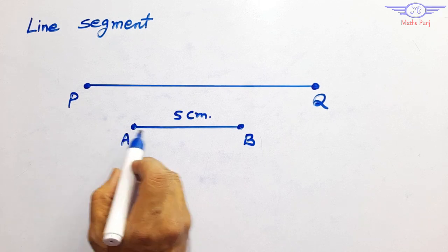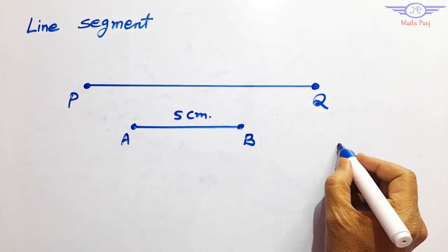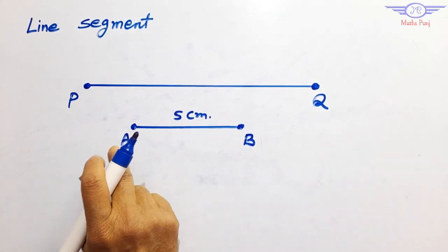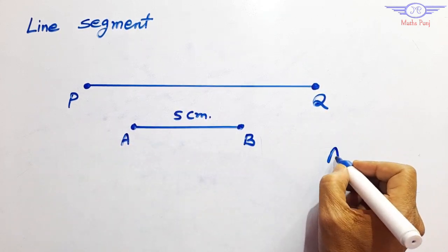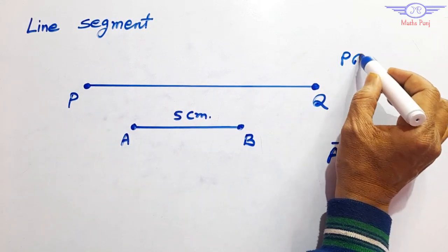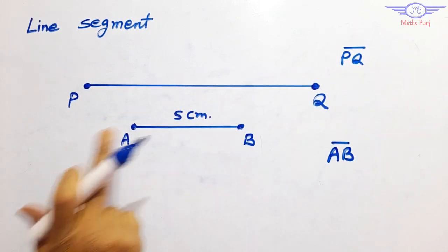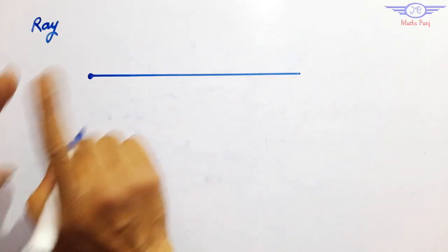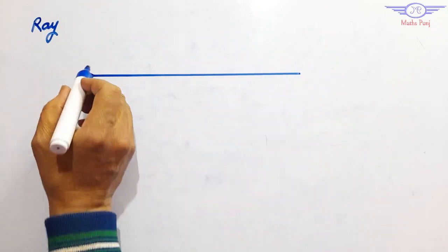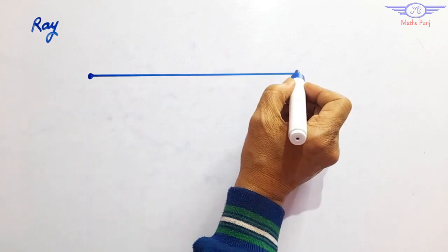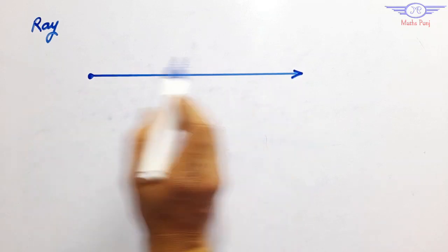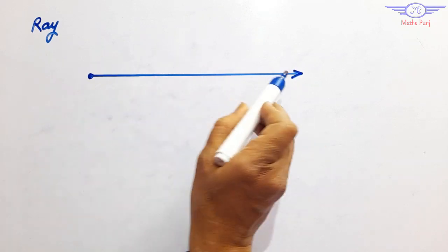The indication for a line segment is shown like this — AB is a line segment, denoted by the symbol with a bar over AB. Similarly, PQ is a line segment. In a line segment there are two end points. But what if there is only one end point? When there is one end point and the ray goes endless in one direction, that is called a ray.